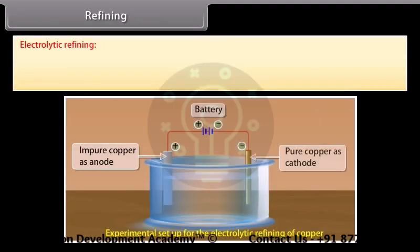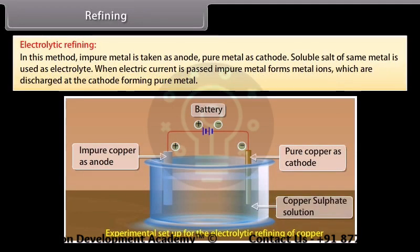Electrolytic refining. In this method, impure metal is taken as anode, pure metal as cathode. Soluble salt of same metal is used as electrolyte. When electric current is passed, impure metal forms metal ions which are discharged at the cathode forming pure metal. For example, copper, zinc and aluminium.